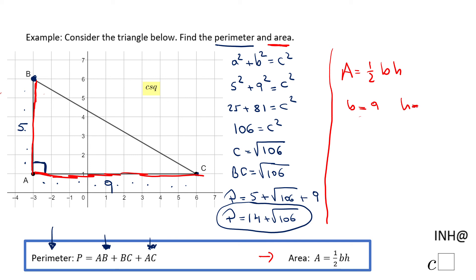So we can plug them now in the formula. A equals one-half times 9 times 5, which is one-half times 45, or just 45 over 2, which is a good value. If you want to simplify and get a decimal value that will be 22.5, but either value will be good.